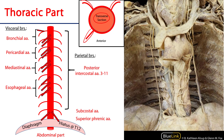There are very many visceral branches and parietal branches. Let's start with the parietal branches. We know that the thoracic part begins at approximately the T3 level, and so serving the posterior and lateral walls of the thorax are going to be the posterior intercostal arteries. These anastomose with the anterior intercostal branches of either the internal thoracic artery or its branches to form the intercostal arteries. Here we have posterior intercostal arteries 3 through 11.